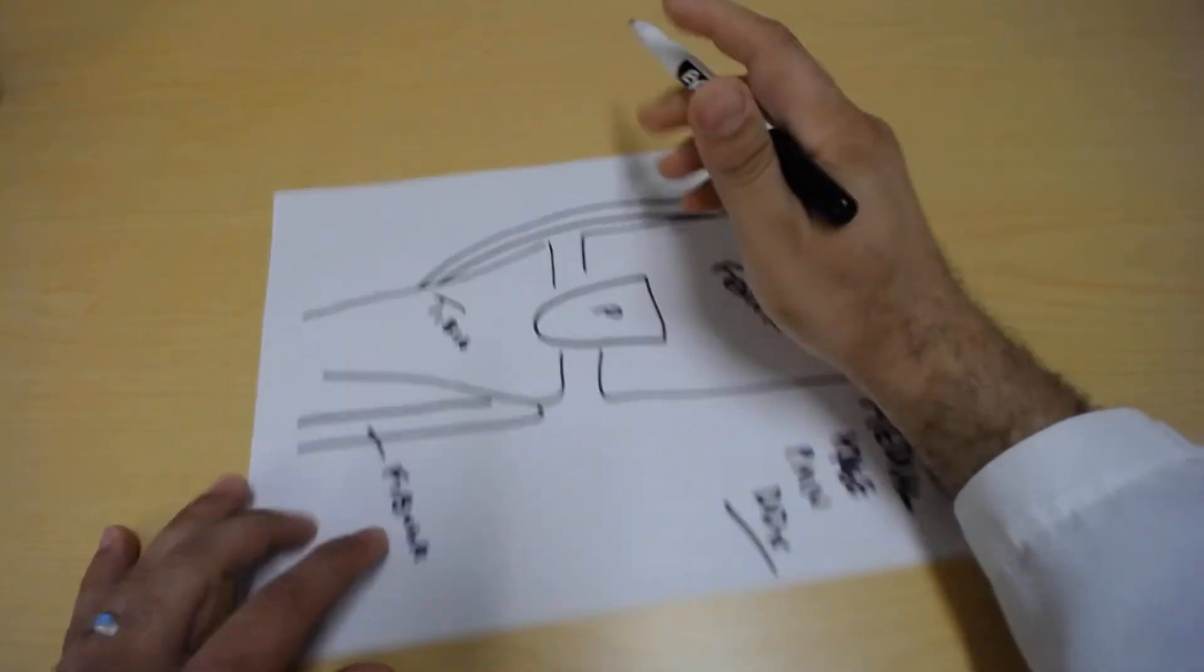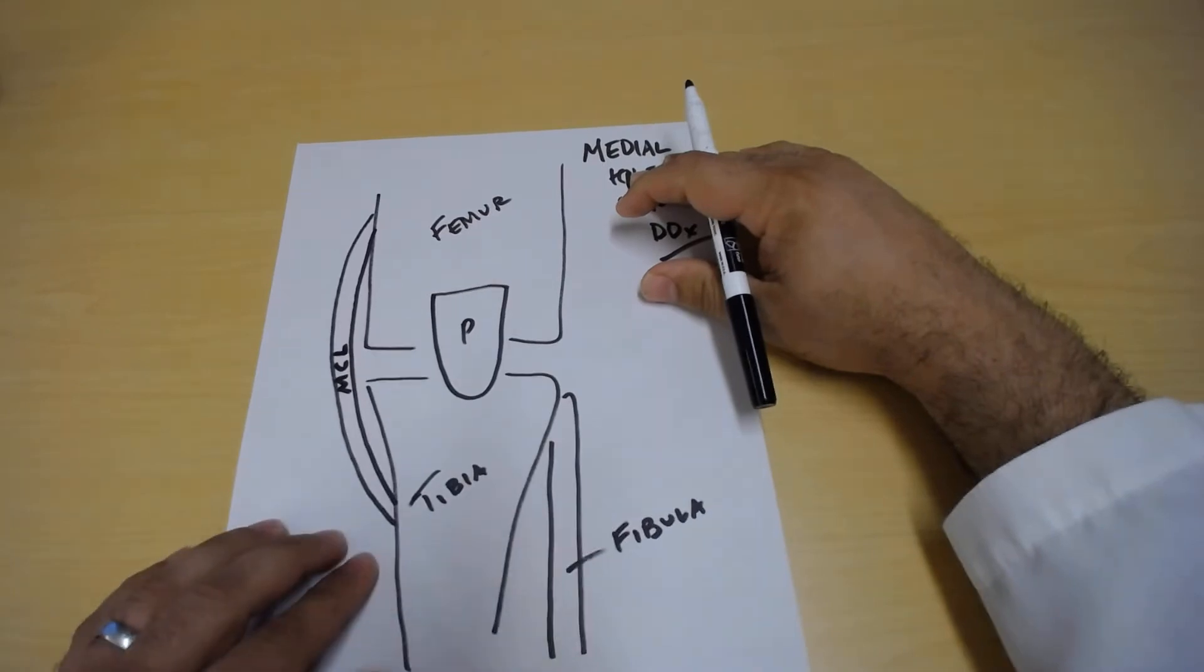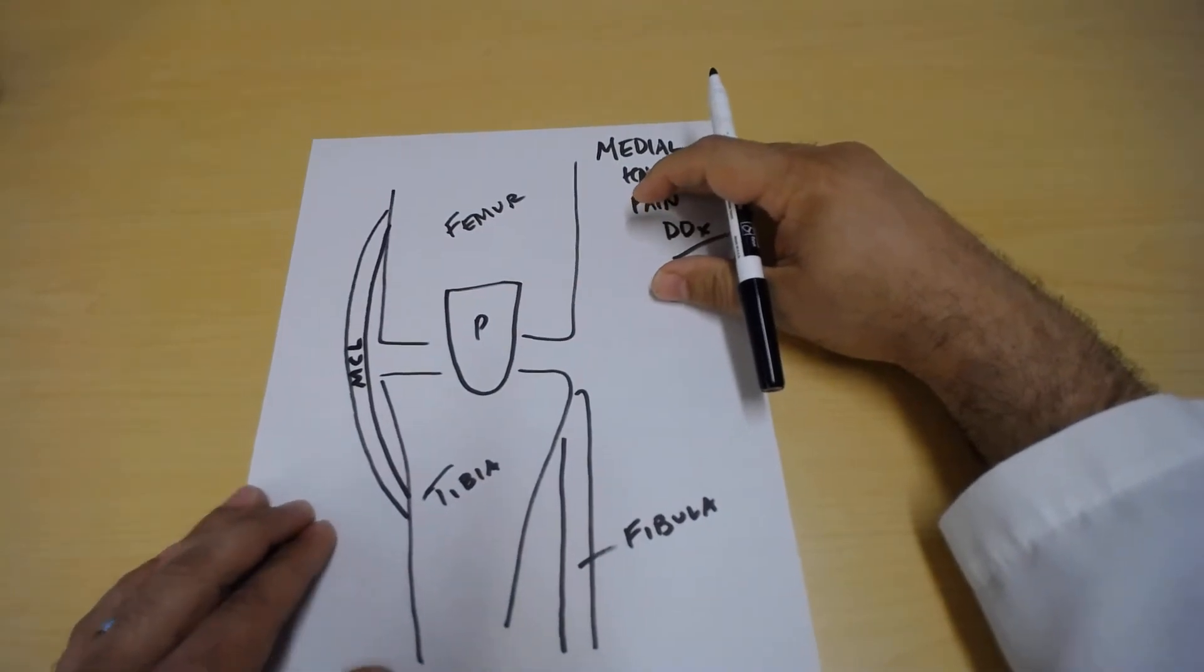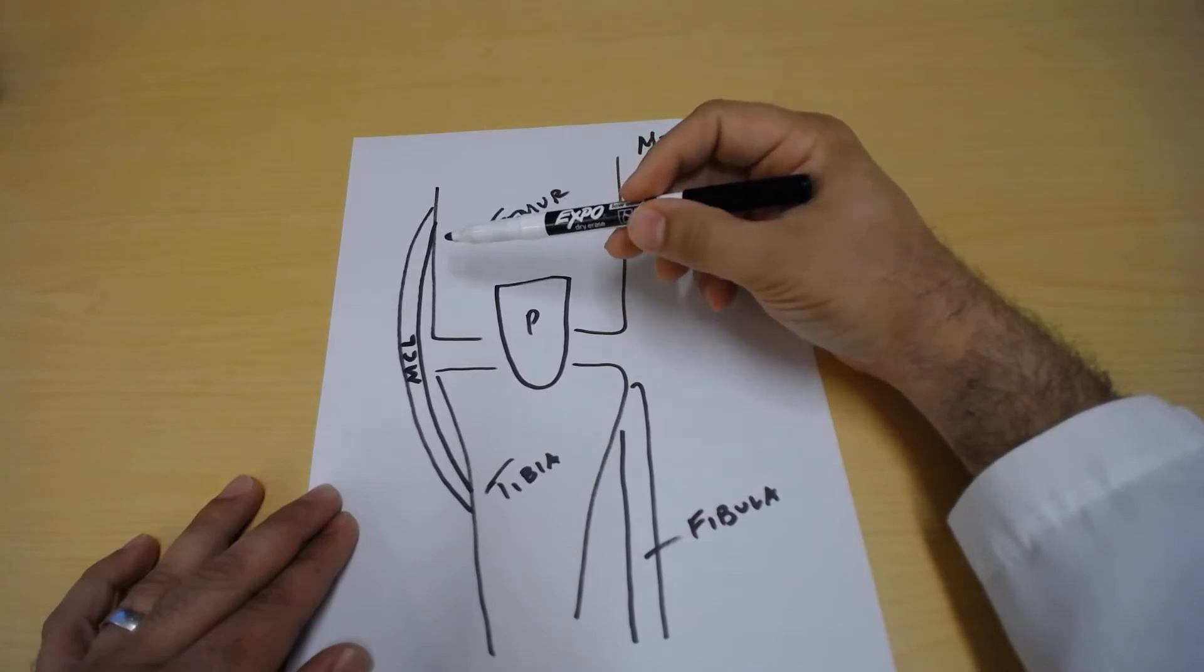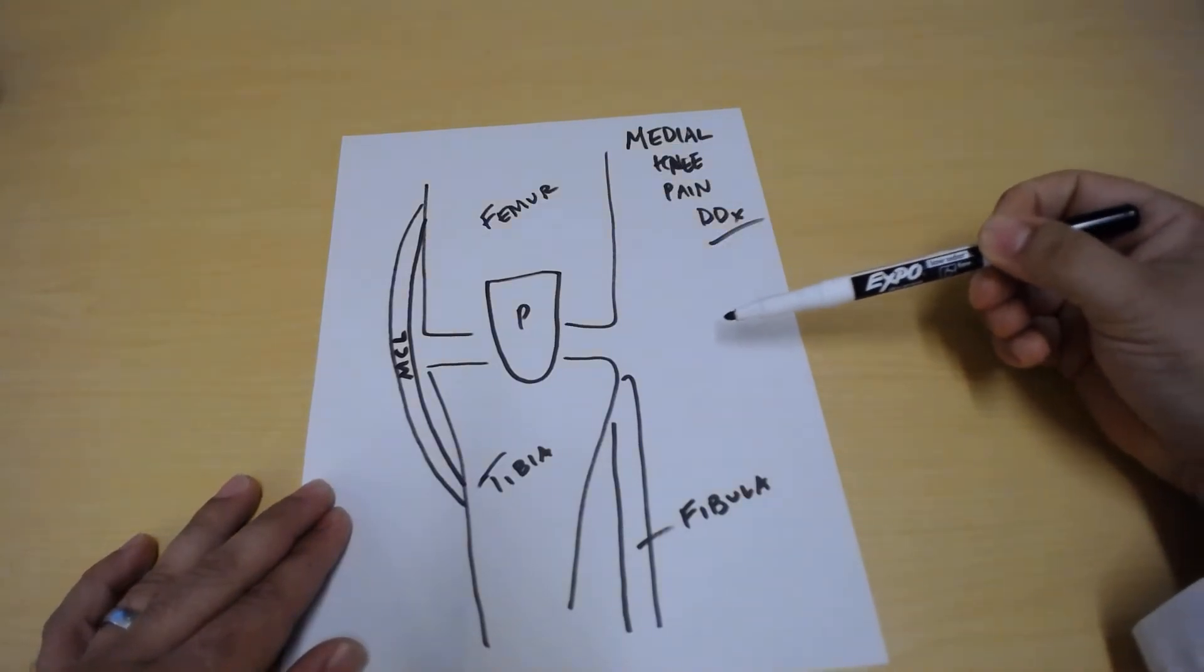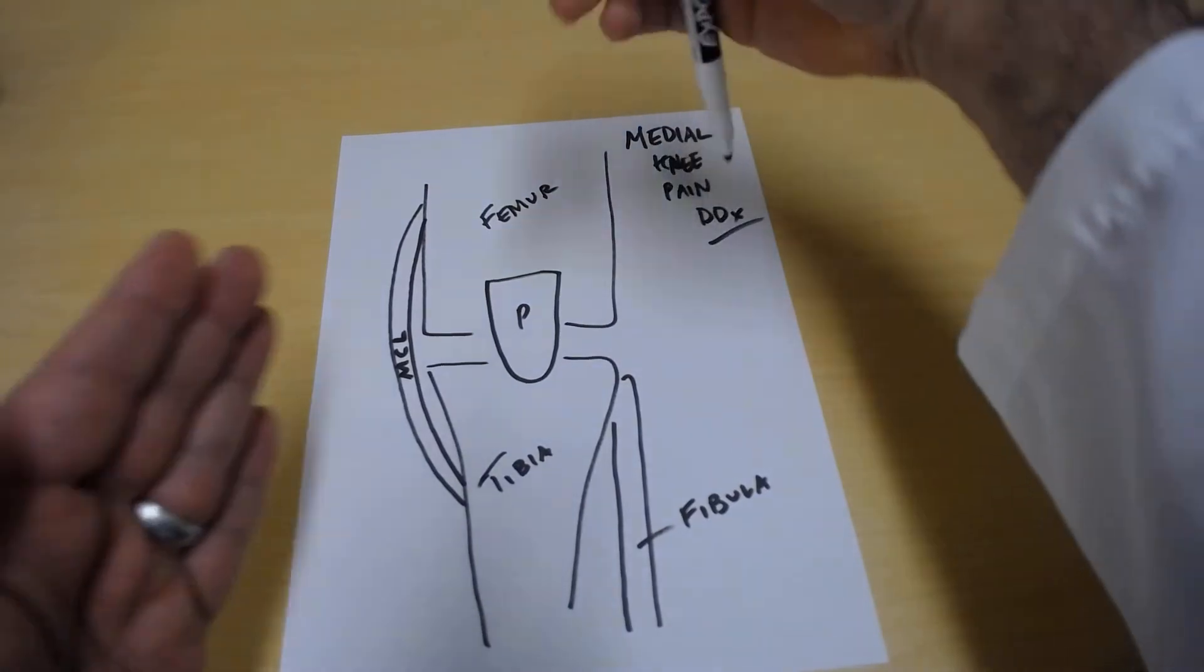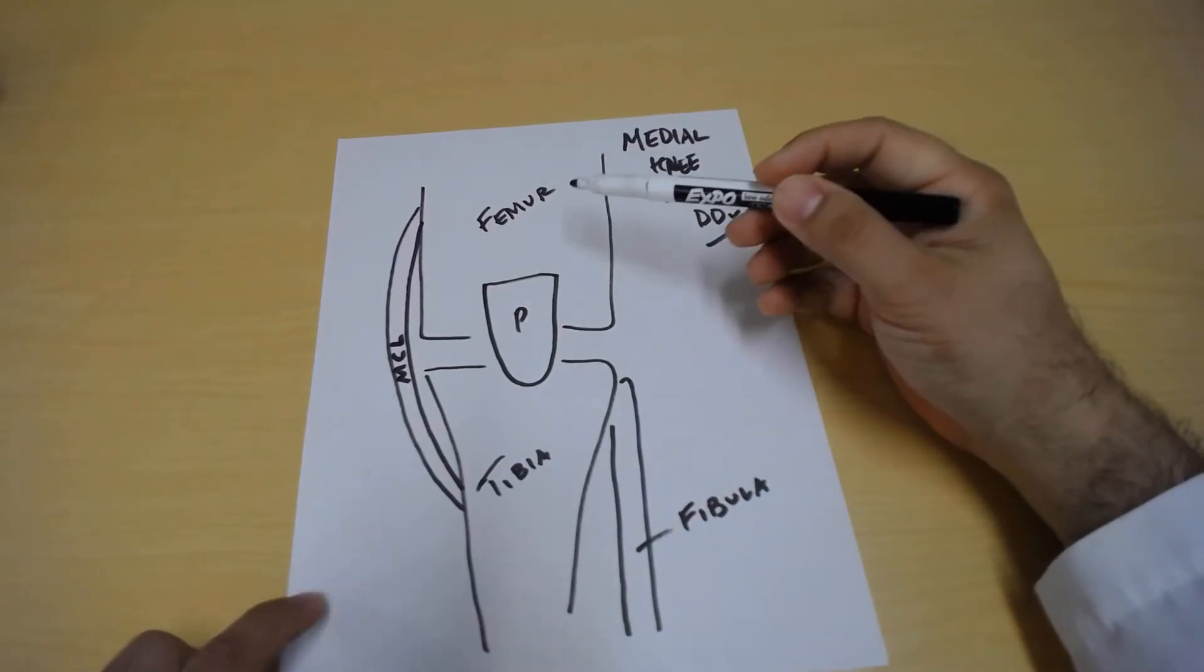This ligament is called the MCL, also known as the medial collateral ligament. This helps prevent the knee from collapsing in when it receives any type of stress from the outside of the knee. So it helps hold those two bones together.